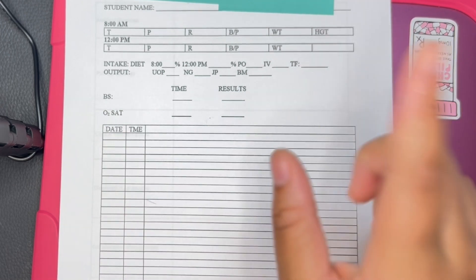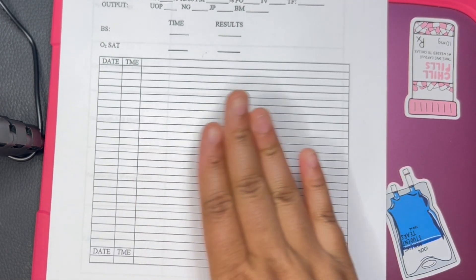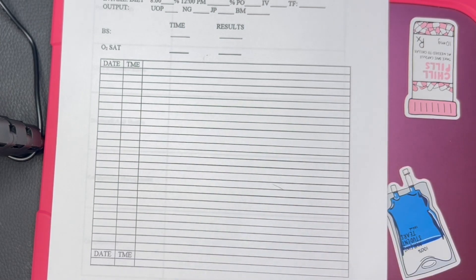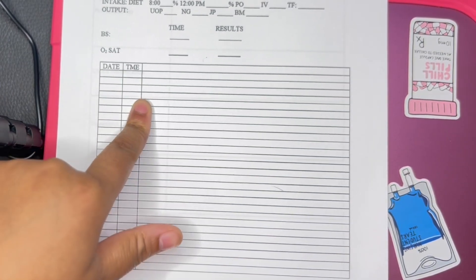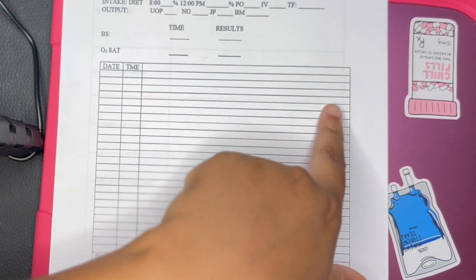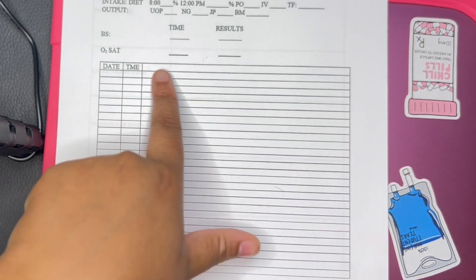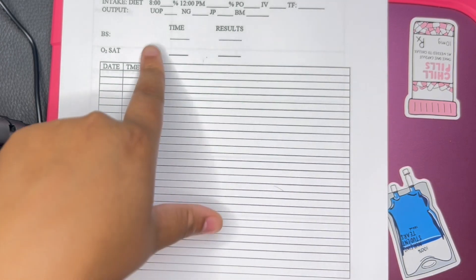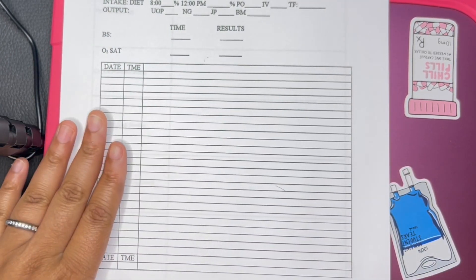This section here is for your nurse's notes. Let's say you went in at eight o'clock, then you will put whatever the date is, eight on the time, then you will put whatever you did. Hey, I greeted the patient and I introduced myself, greeted the patient and I did a head-to-toe assessment.